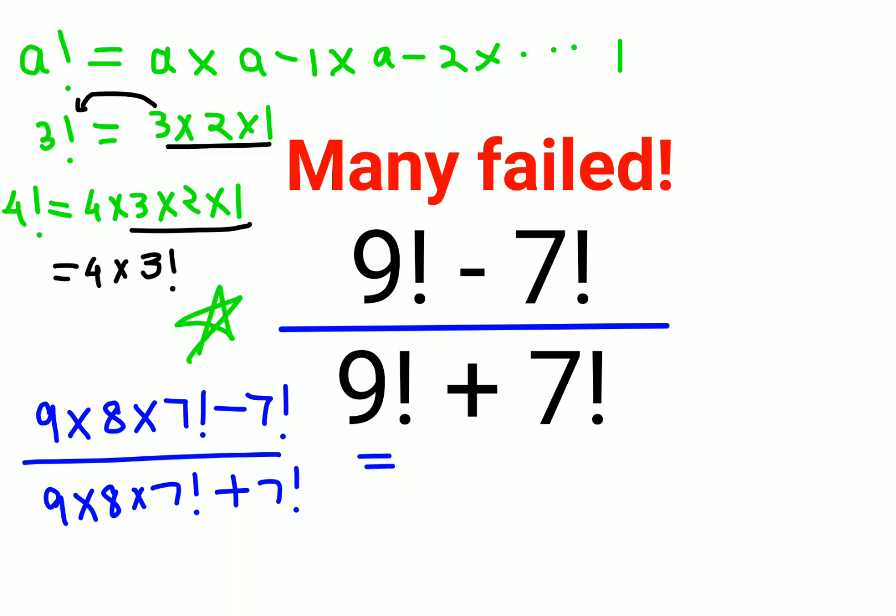Now what happens is you factor out what is common, which is 7 factorial. Then you are left with 9 times 8 minus 1 in the numerator. Here also, we can take out 7 factorial, and I am left with 9 times 8 plus 1 in the denominator.